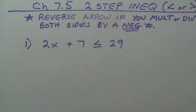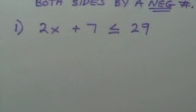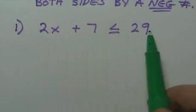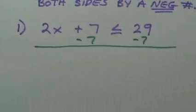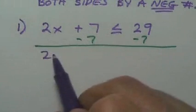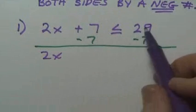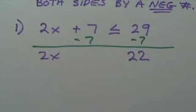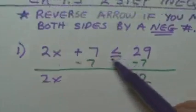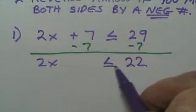Let's go to number one, a two-step problem. This is just like all the others we've done, except it just has an inequality. My first step is to get rid of the plus seven, so I simply subtract seven on both sides. Twenty-nine minus seven is twenty-two. Do I switch the arrow? That's only if you multiply or divide both sides by a negative — I did not do that, so the arrow stays the same.